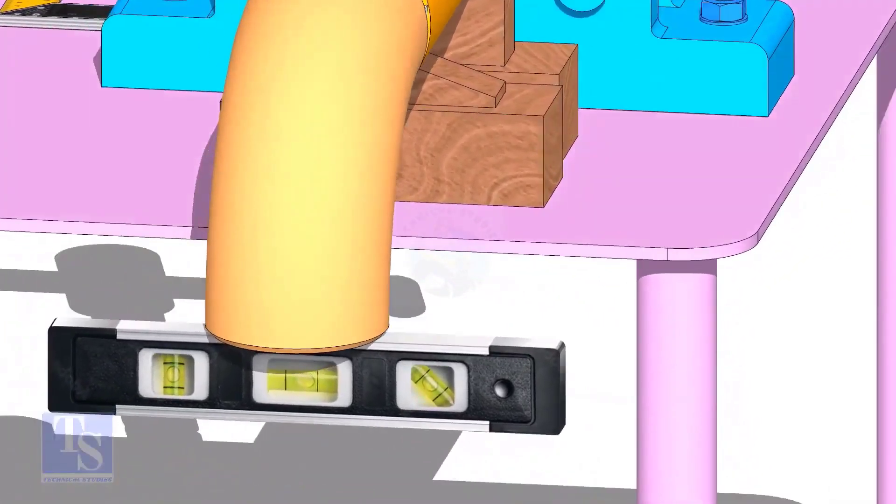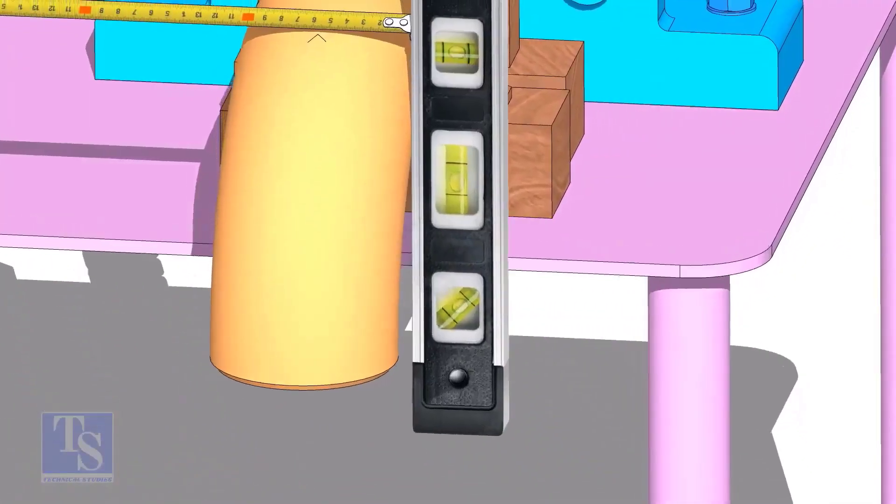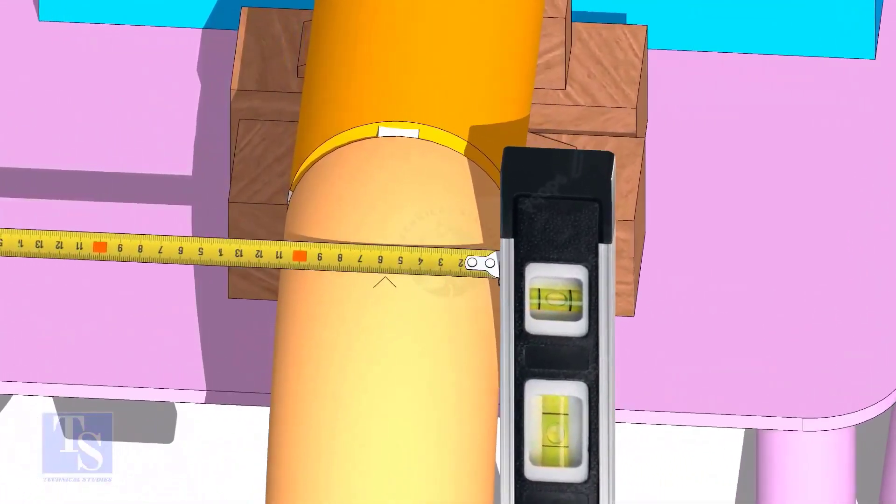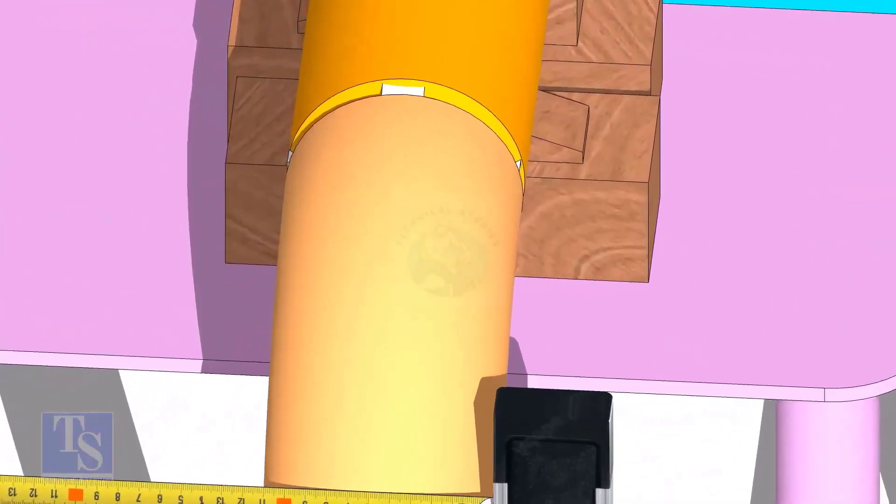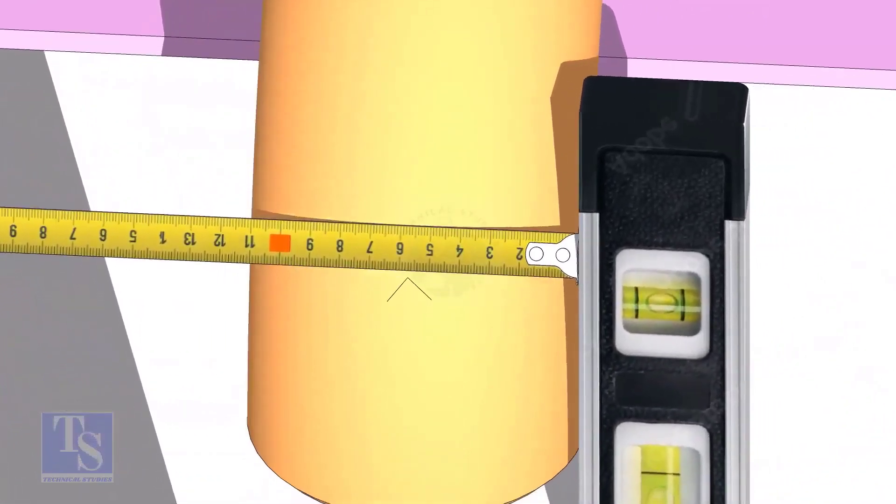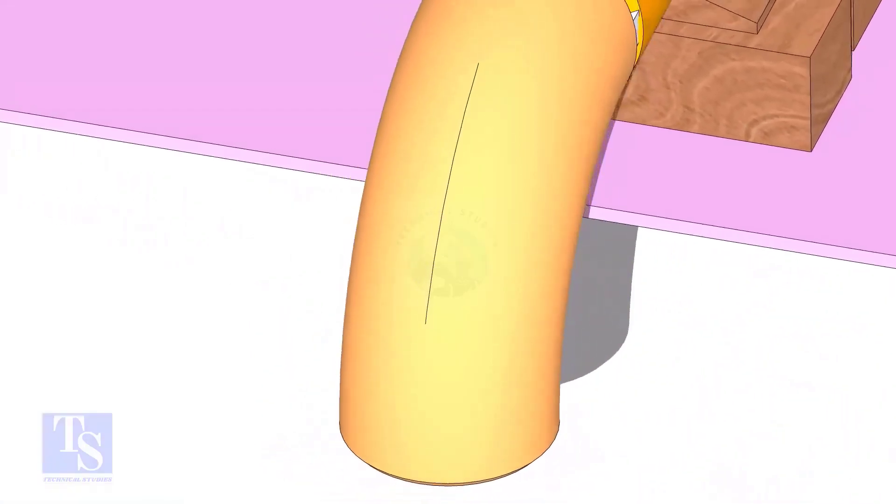Mark the center line of the elbow. OD of a four inch pipe is 114mm. Hold a level bottle at the side of the elbow vertically, and mark 57mm on the elbow at least three locations, as shown. Draw a line connecting these marks.